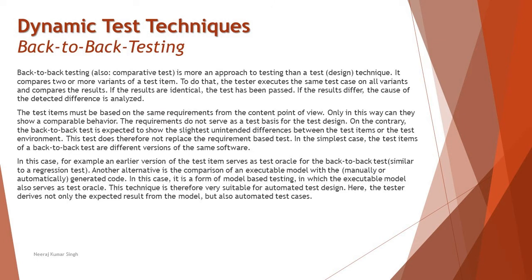First, the definition of back-to-back testing. Back-to-back testing is a type of testing conducted when there are two or more variants of components with similar functionality - a test item that may have different variants but definitely has some common functionality. It is basically to run your tests on different variants and see how the outcome responds. If results are the same, it is passed; if different, the difference is analyzed. Because it is about comparing results on different variants, it is also called comparison testing.